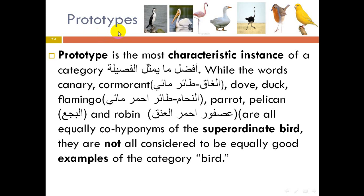Prototype is the most characteristic instance of a category. While canary, cormorant, dove, duck, flamingo, parrot, pelican, and robin are all equally hyponyms of the superordinate 'bird,' they are not all considered equally good examples of the category bird — they are not equally representative of it.